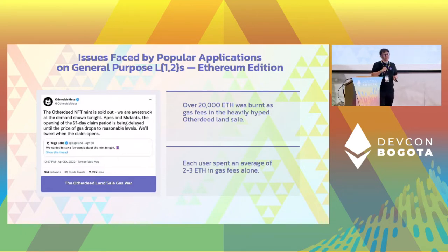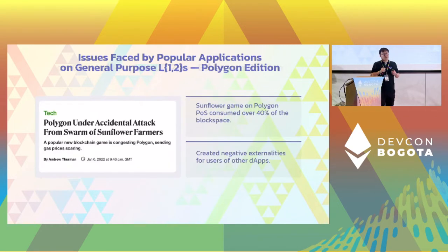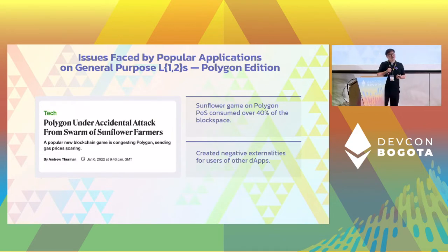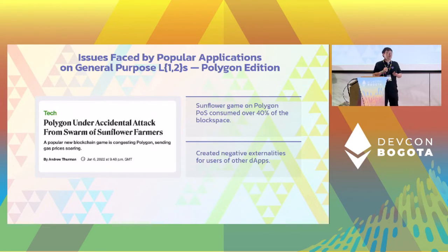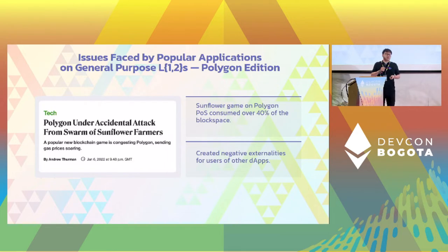One example on Ethereum is the Otherdeeds NFT mint. Basically people probably paid more gas fees than the mint fees. It's not just that scenario on Ethereum, but also on some highly scalable blockchains like Polygon. We had the sunflower game, and just so many transactions congested the network.